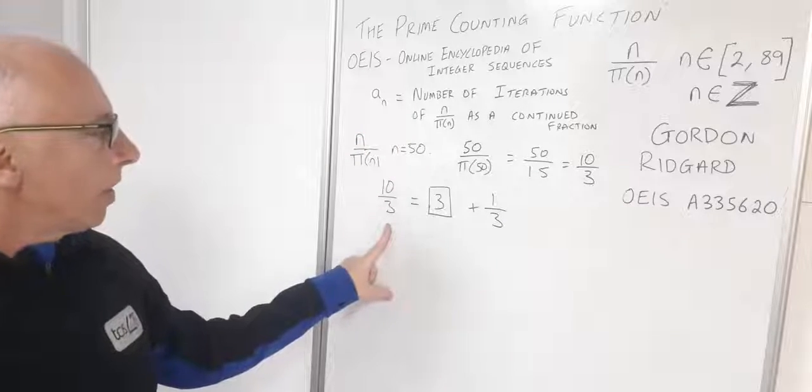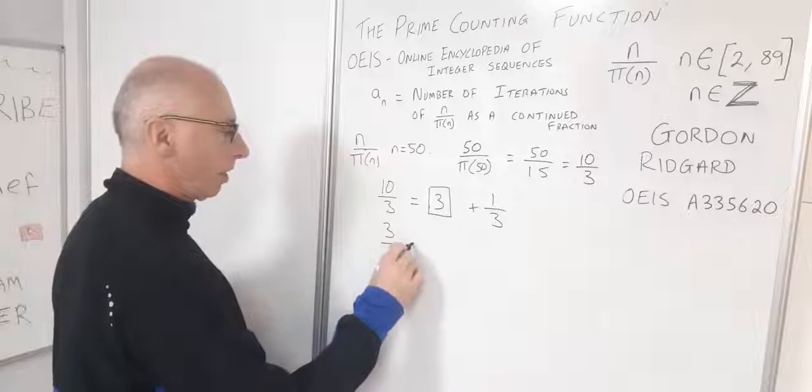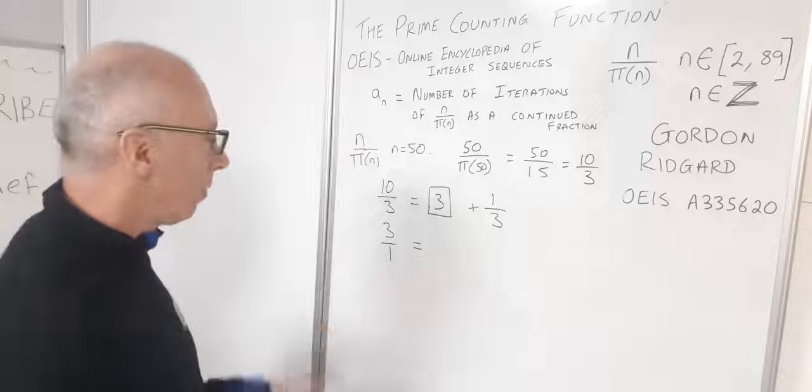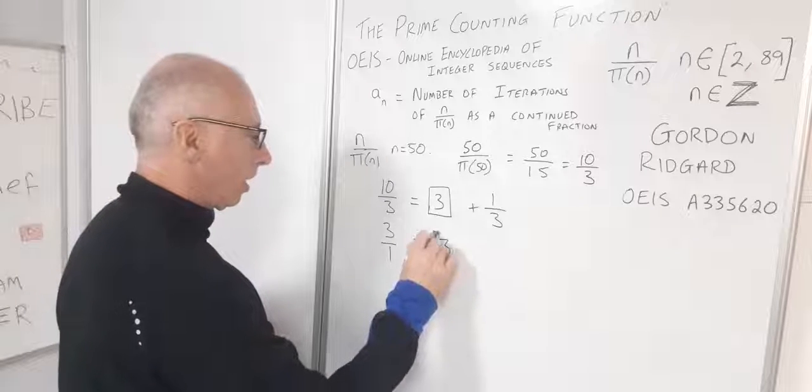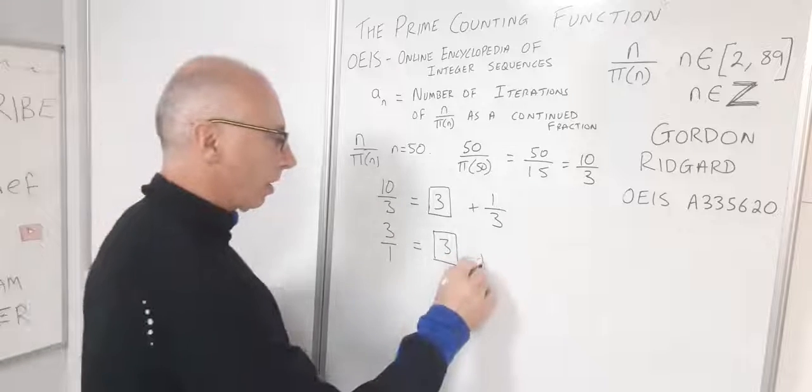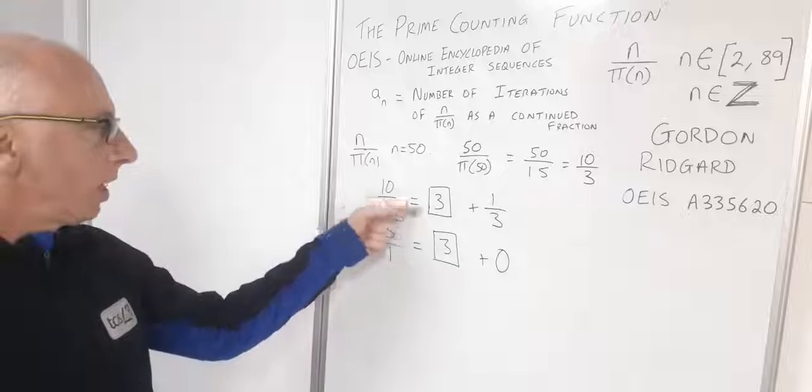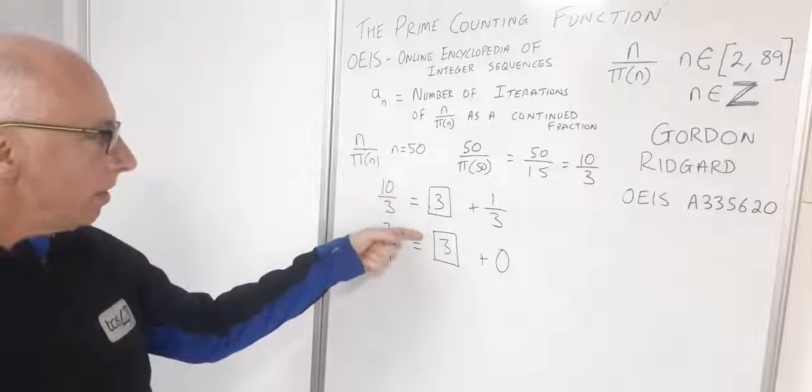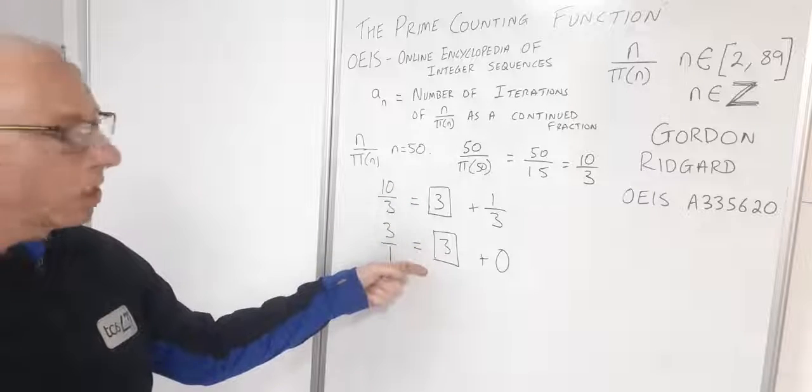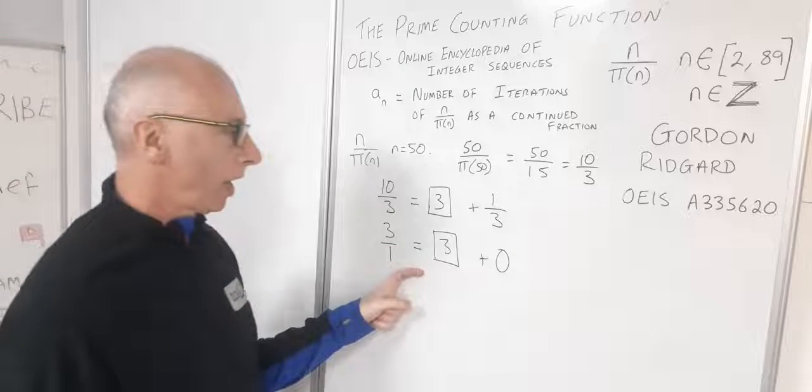Now the next thing we do on the next line we take the reciprocal of this which is 3 over 1 and we find the integer part of this solution which is 3, and therefore our leftover is 0. So at this particular point we stop. The iterations to get this as a continued fraction are 2.